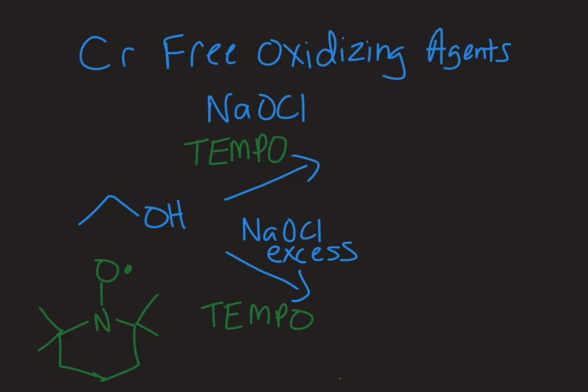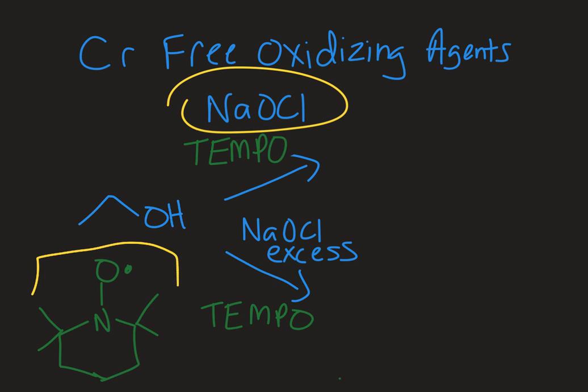In this first example I have bleach — NaOCl, which is just bleach like what you use doing laundry — in the presence of a free radical catalyst called TEMPO. The structure drawn in green is TEMPO. There's a catalyst that allows the oxygen of the alcohol to attach to it and facilitates the formation of the double bond.